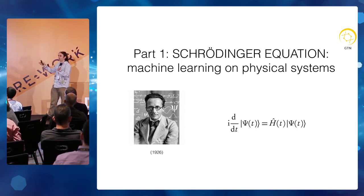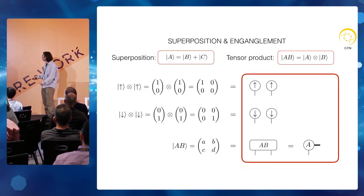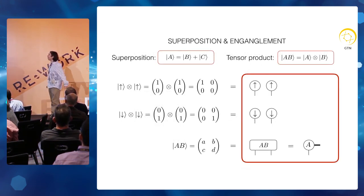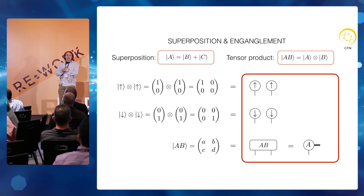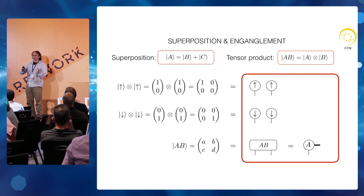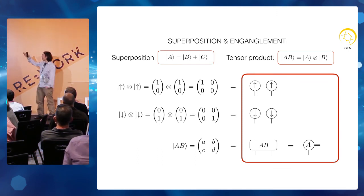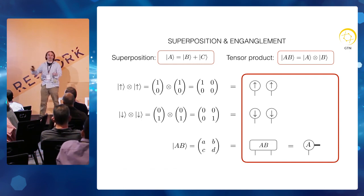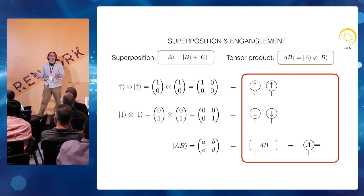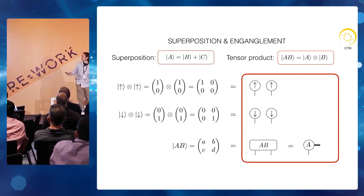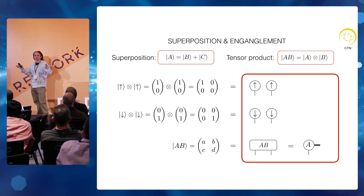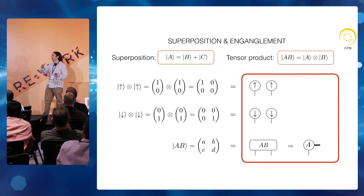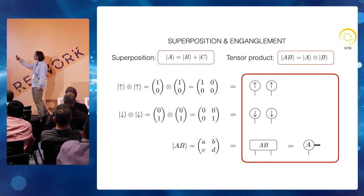Apparently there's nothing very complicated about quantum mechanics, but of course everybody knows that's not quite true. The complications come in when you take seriously the fact that physical states correspond to vectors — you can add these vectors and you can take tensor products of these vectors. If you add vectors, you're allowed superpositions, and that means things like Schrödinger's cat, where the cat can be both alive and dead.